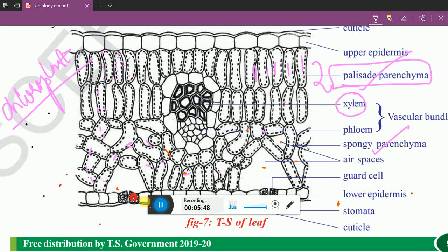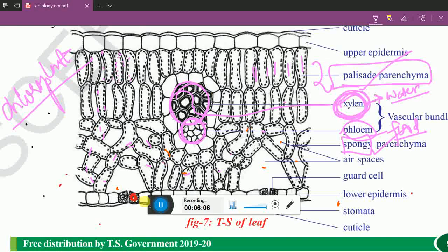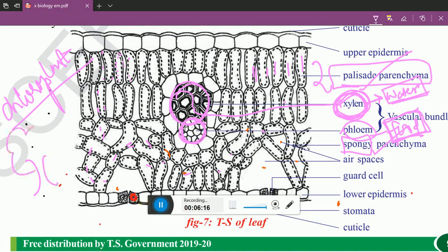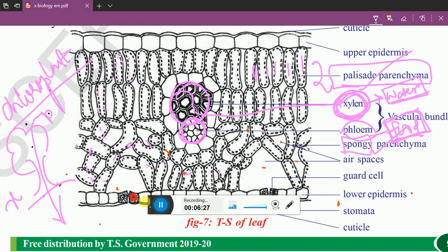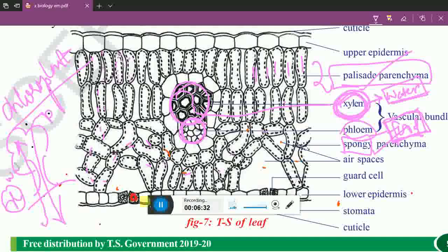Between palisade parenchyma and spongy parenchyma, you can see xylem. The upper region is called as xylem. The lower region is called as phloem. Xylem is important for water materials. Phloem is important for food. Xylem is important for water transportation in a plant. Phloem is responsible for food transportation for the plant.